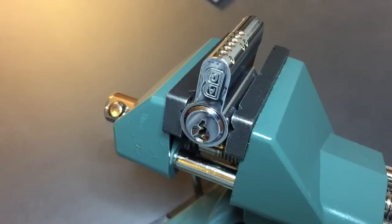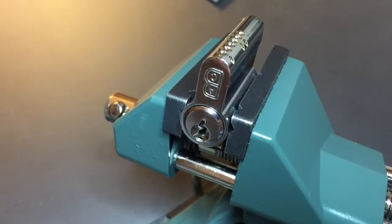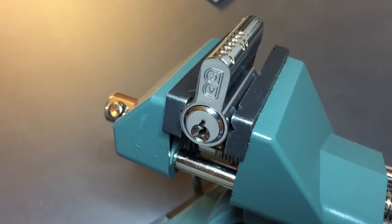This is the Lock Picking Lawyer. The lock I have for you today is a Full-X brand ABC or anti-bump cylinder. This was sent to me by Joshua Hoffmeyer, so thank you very much for a really interesting lock. Let me show you why it's so interesting.